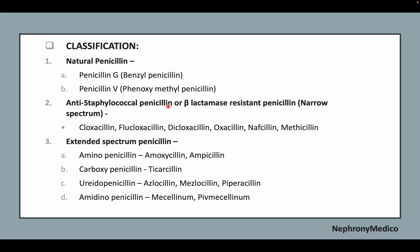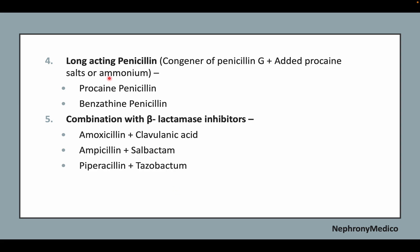Antistaphylococcal penicillin, or beta-lactamase resistant penicillin, includes cloxacillin, flucloxacillin, and dicloxacillin. Extended spectrum penicillins include aminopenicillins like amoxicillin, ampicillin, and ticarcillin. Long-acting penicillins include procaine penicillin and benzathine penicillin. Combinations with beta-lactamase inhibitors include amoxicillin with clavulanic acid, ampicillin plus sulbactam, and piperacillin plus tazobactam.